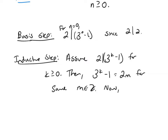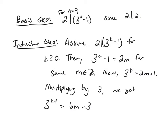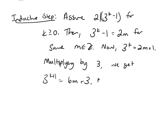I'm not outlining the proof, just writing it down — you might want to do an outline for the inductive step. If I solve for 3 to the k, I get 2m plus 1. Multiplying by 3, we get 3 to the k plus 1 equals 6m plus 3. I can break this down as 6m plus 2 plus 1, and subtracting 1 gives 3 to the k plus 1 minus 1 equals 6m plus 2.